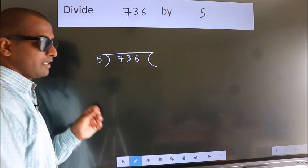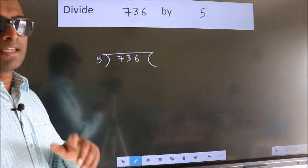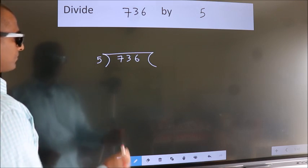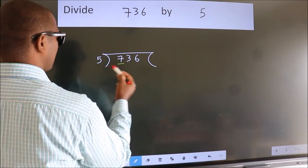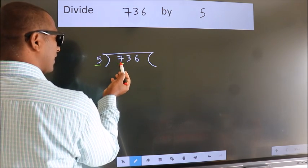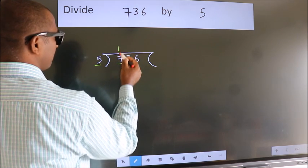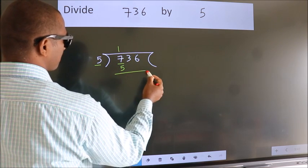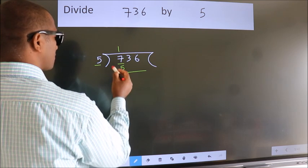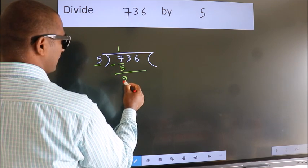This is your step 1. Next, here we have 7. Here 5. A number close to 7 in 5 table is 5 once 5. Now we should subtract. We get 2.